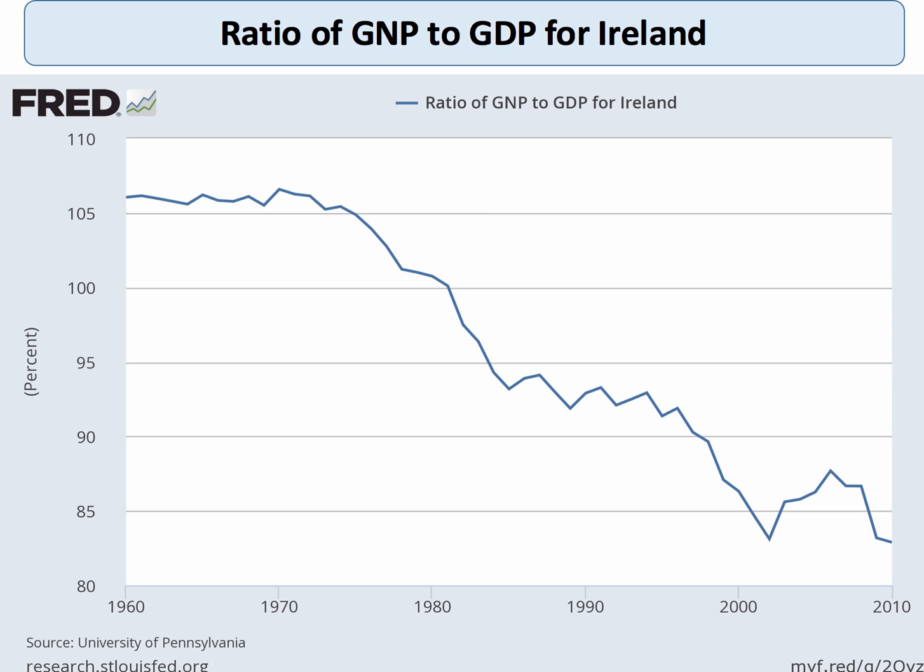Here's a good case of a country whose GNI is lower than its GDP. Ireland has a ratio of GNI to GDP of around 85%. Partly that's because there are lots of foreign owned companies based in Ireland, attracted by, for example, low corporation tax. The profits that those companies make leave the Irish economy and go back to the country of ownership.